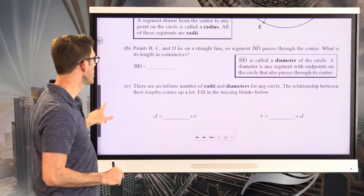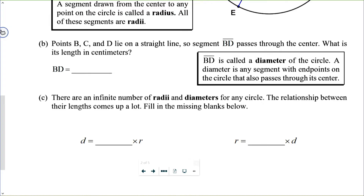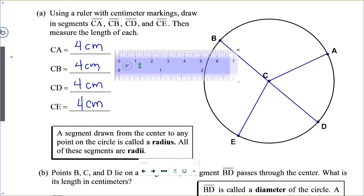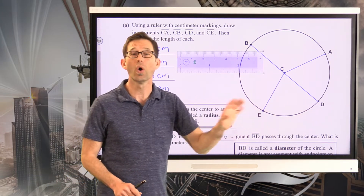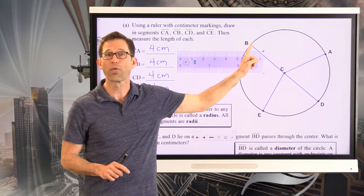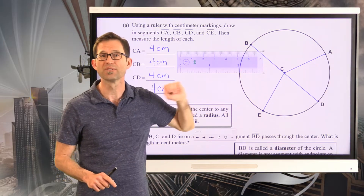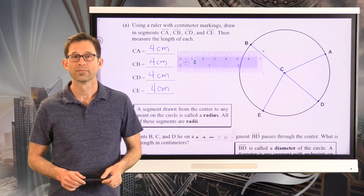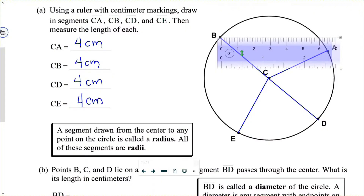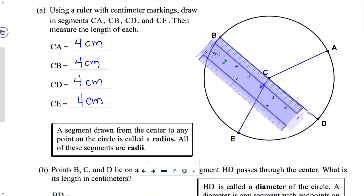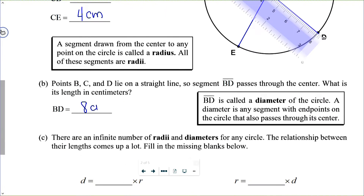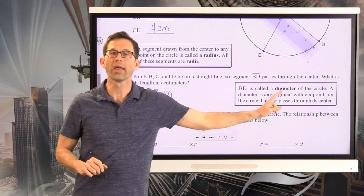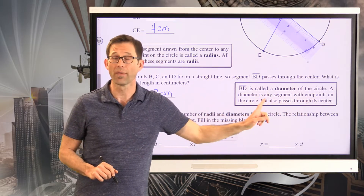Now let's take a look at letter B. Points B, C, and D lie on a straight line, so segment BD passes through the center. What is its length in centimeters? B, C, and D are collinear — they all lie on the same line — and therefore BD passes through the center of the circle. If I put my ruler on B and extend it down, I find that the length of BD is eight centimeters. BD is what we call a diameter of the circle.